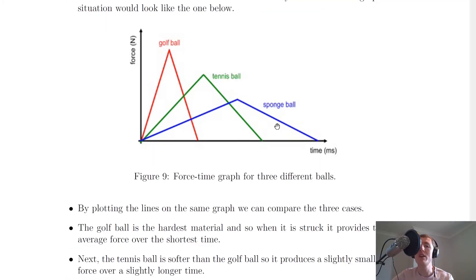It should be quite obvious that from these three balls the golf ball will be the hardest material, and so when it is struck it provides the largest average force over the shortest time. There will be the largest force on contact between the club and the golf ball acting over the shortest time. We've shown that on the graph because we've got the shortest time here and the largest average force.